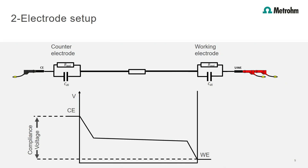The electrolyte between the electrodes can also be described by a resistance — the better the conductivity, the lower the resistance. The compliance voltage needs to be applied between the two electrodes and it consists of the sum of all voltage drops across the cell. Unfortunately, with this setup it is only possible to determine the total cell resistance and not each reaction separately. There is no information available about the electrode kinetics of each individual electrode.